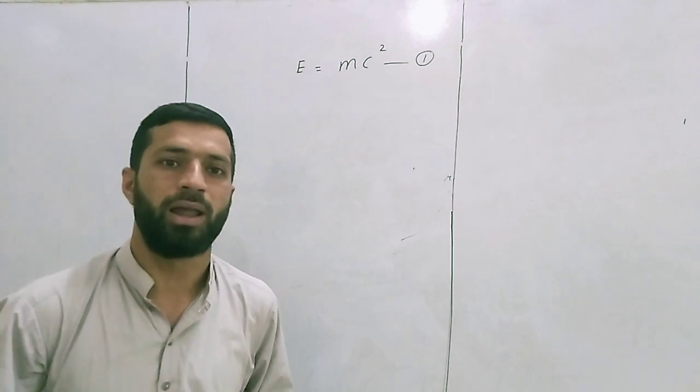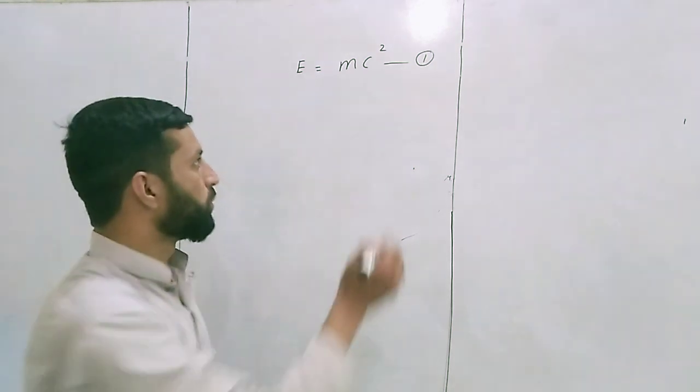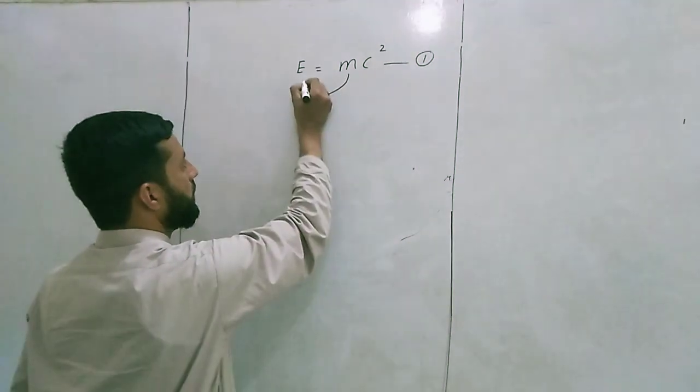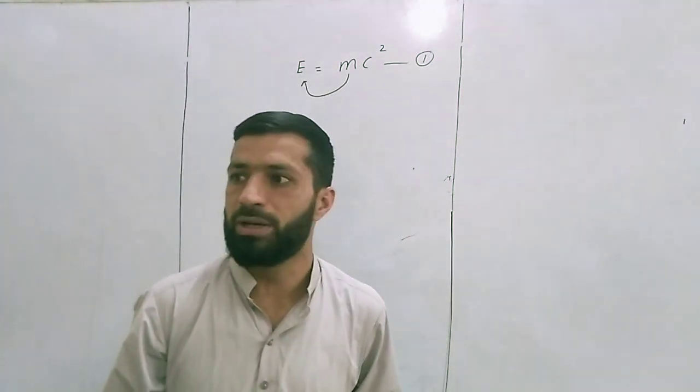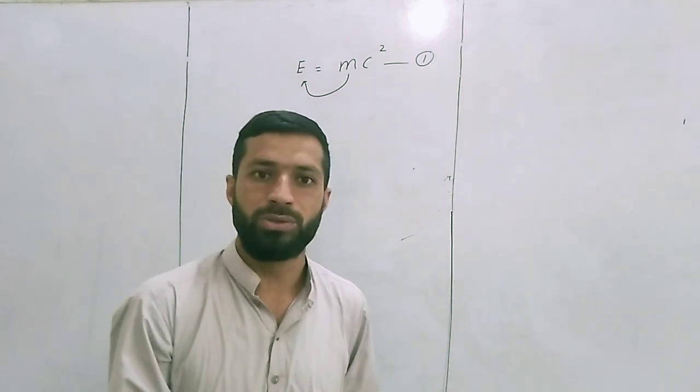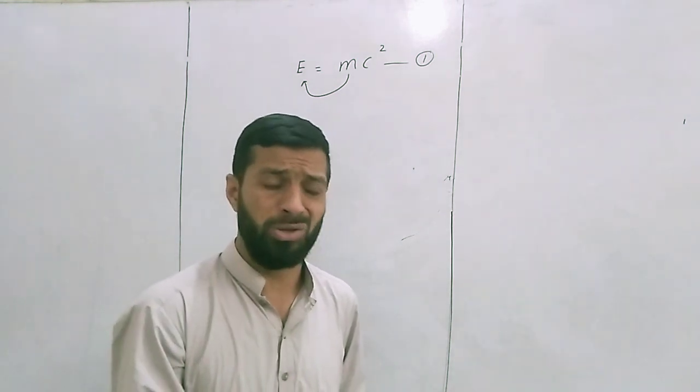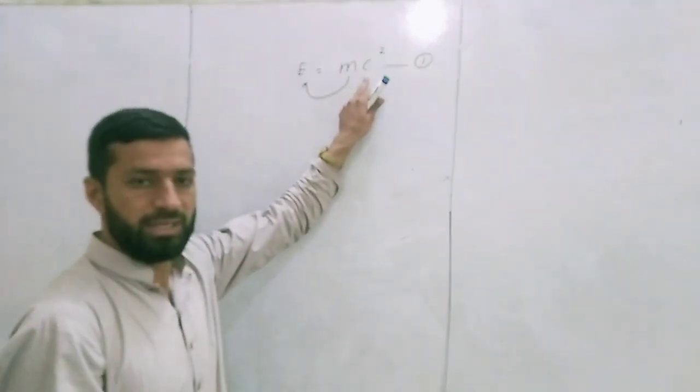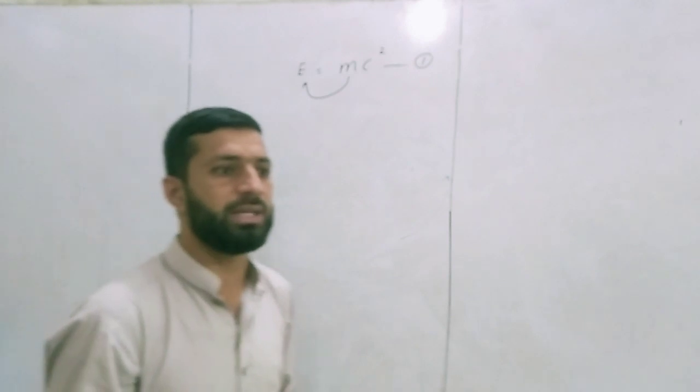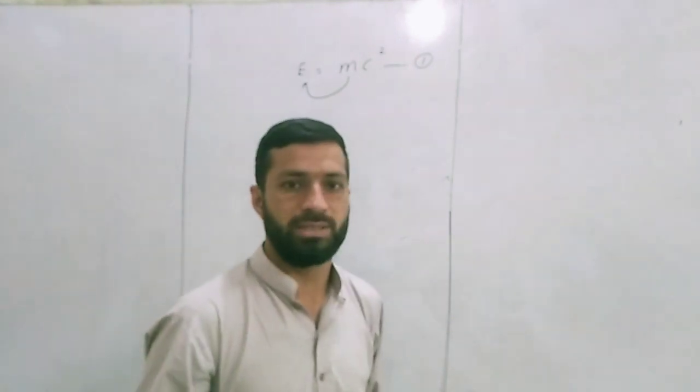there is an atomic bomb or hydrogen bomb that explodes, so mass is converted into energy. Usually this explosion is accompanied with a large amount of energy with high speed. That's why c squared is here, and we will also discuss why c squared is in this equation.